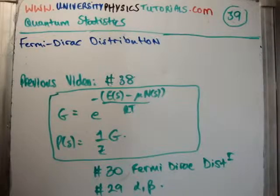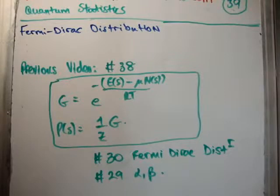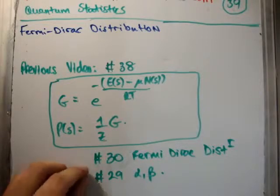In video number 30, I derived the Fermi-Dirac distribution previously, but I'm doing it a different way this time. I'm going to use only the Gibbs factor and the grand partition function, whereas before it was all down to multiplicities, and to be honest it was a pain.